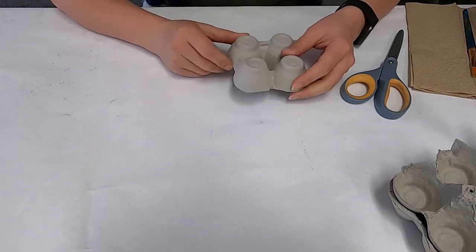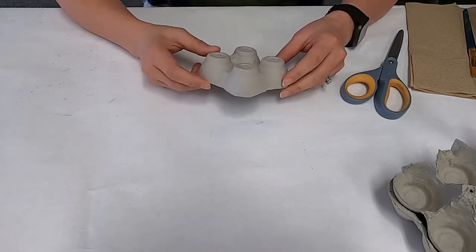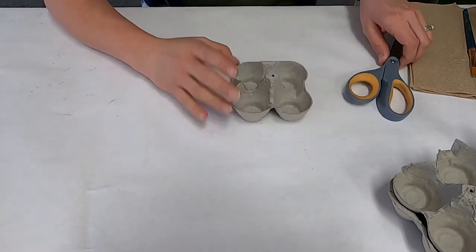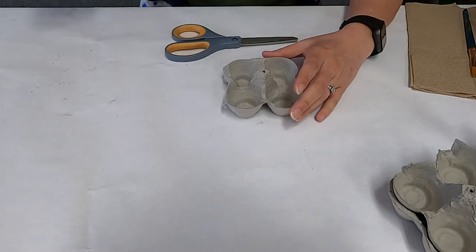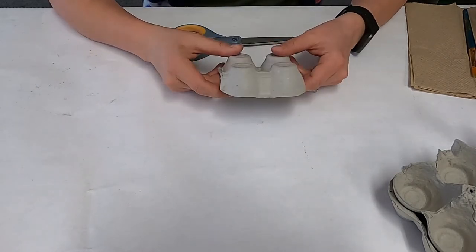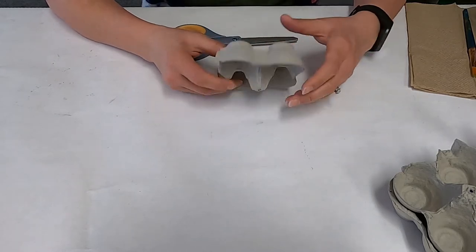First, what you need is a recycled paper egg carton. As you can see here, I've already cut mine up, so you need to be able to cut this up easily. You're probably going to have to have an adult help you. It is easier for adults to do this than it is for kids.